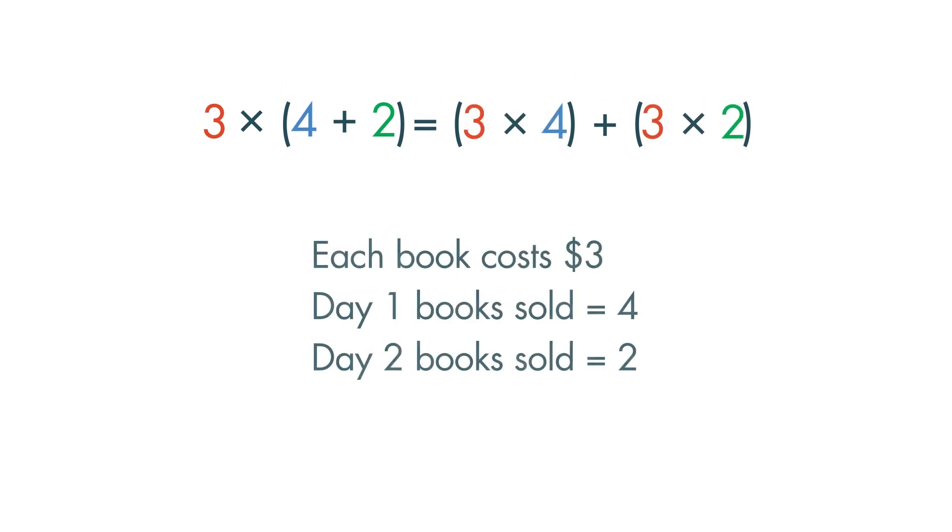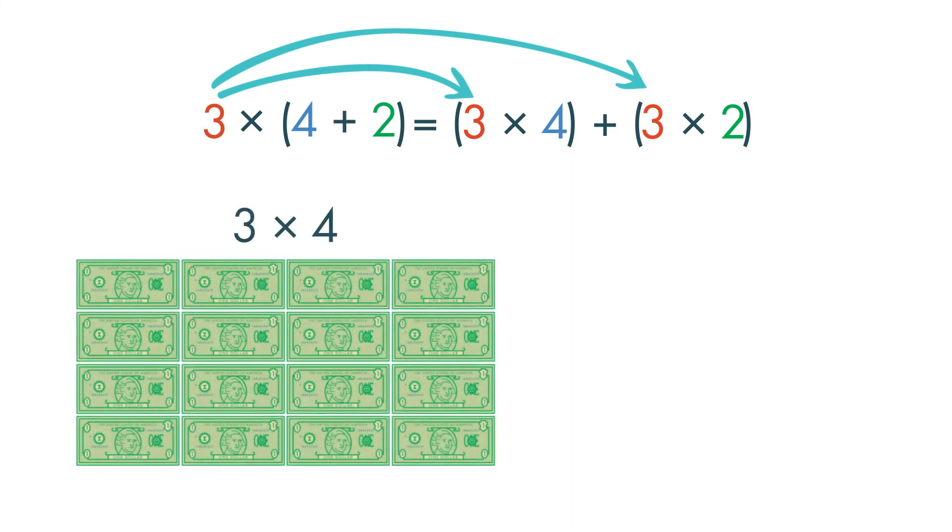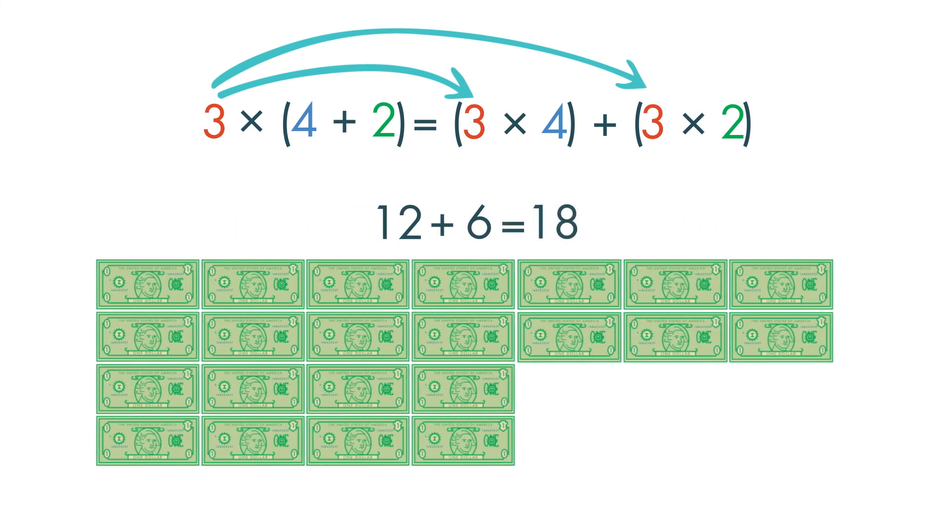We get the same answer if we figure out how much he made each day and then combine the two amounts. We distribute the multiplier, the 3, to get the equation 3 times 4 plus 3 times 2. 3 times 4 is equal to 12, and 3 times 2 is equal to 6. 12 plus 6 is equal to 18. Louis made $18.